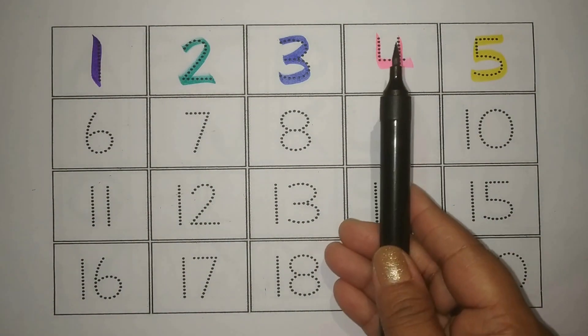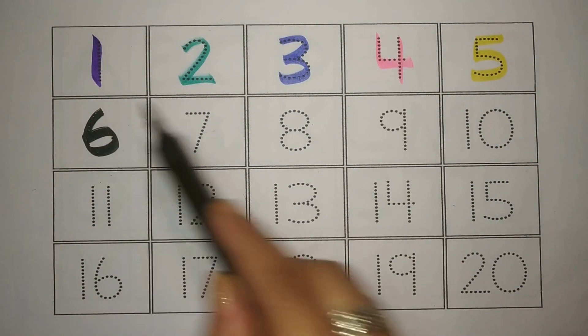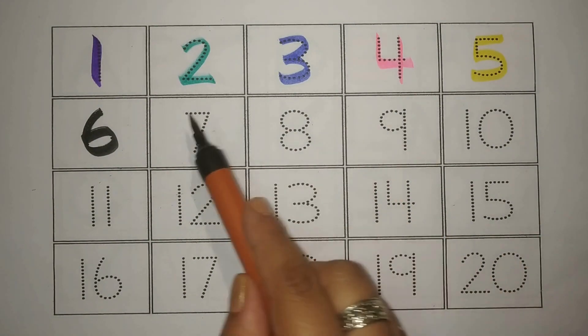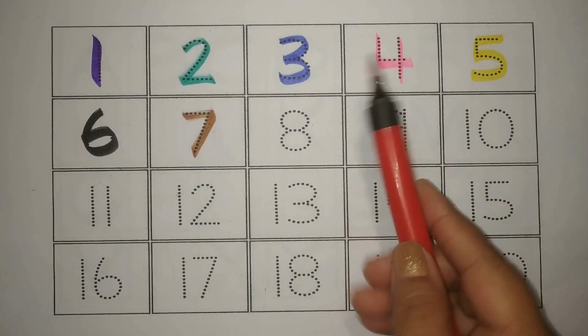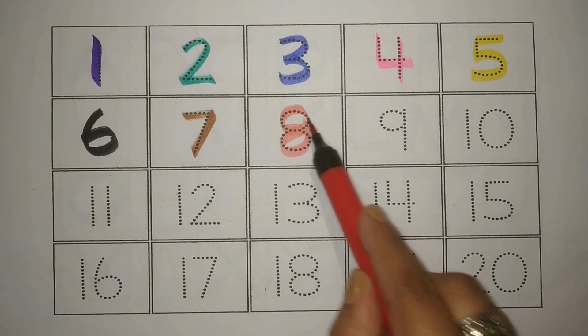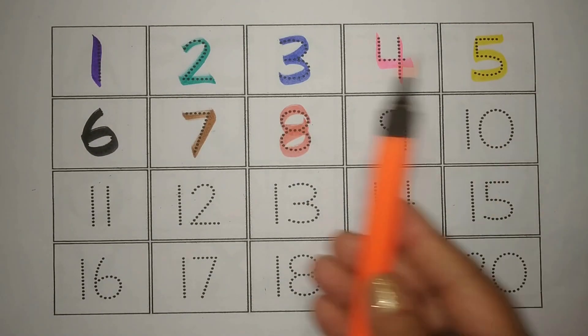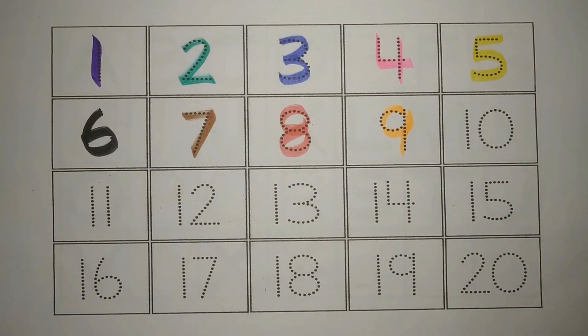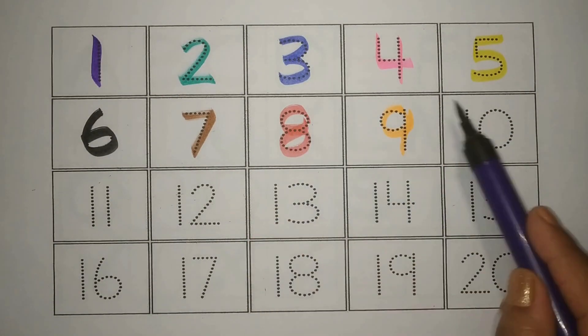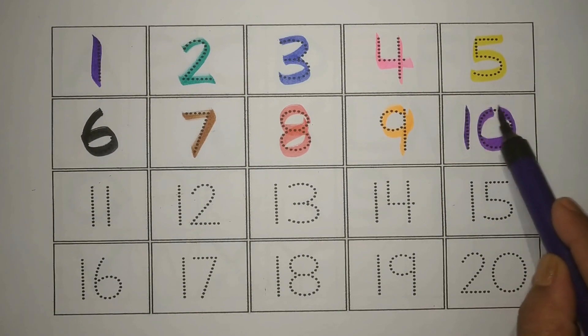Black six, chai. Brown seven, saad. Red eight, aat. Orange nine, no. Purple one zero ten, das.